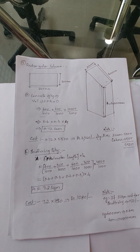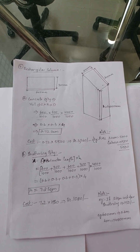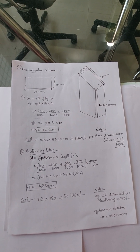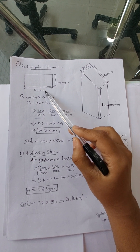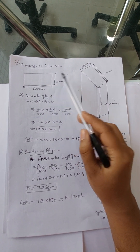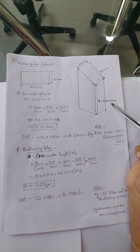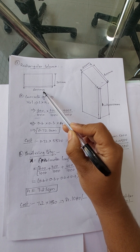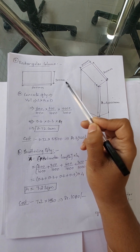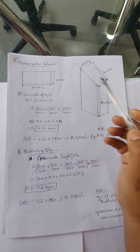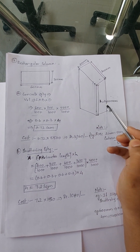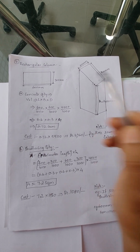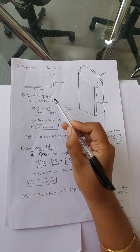Firstly we will start with the rectangular column. Here you can see the 2D view and the 3D view of this rectangular column. The length equals 600 mm, the breadth equals 300 mm, and the height equals 4000 mm. Now we will find the concrete quantity for this rectangular column.